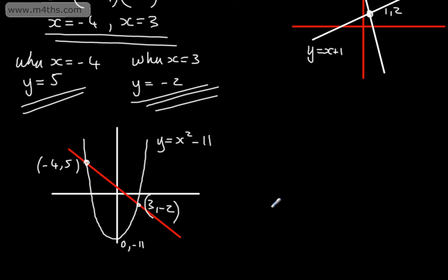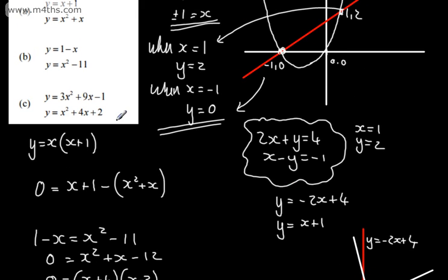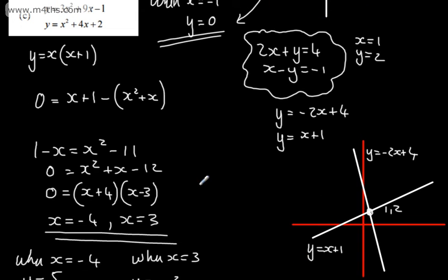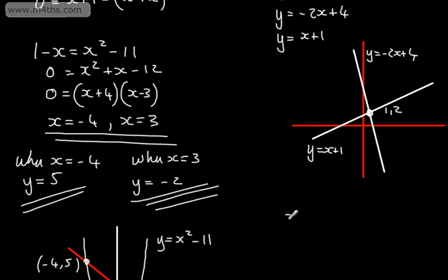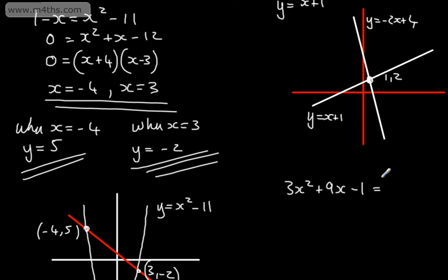Let's look at the last one. We've got y equals 3x squared plus 9x minus 1 and y equals x squared plus 4x plus 2. Since both are expressed in terms of y, we can set them equal: 3x squared plus 9x minus 1 equals x squared plus 4x plus 2. So we have two quadratic equations here — essentially finding the intersection of two parabolas.